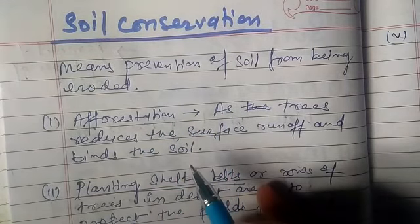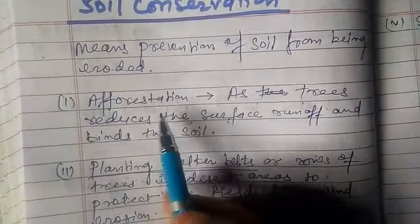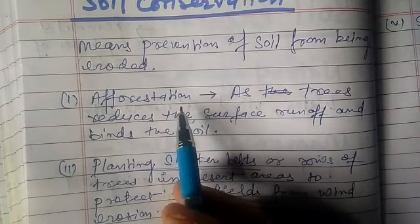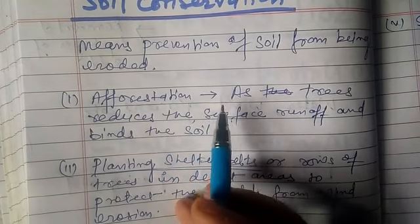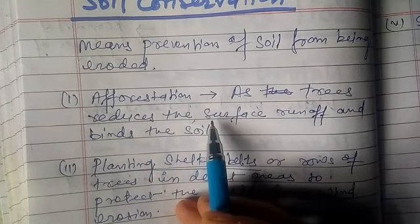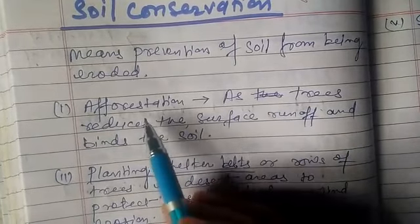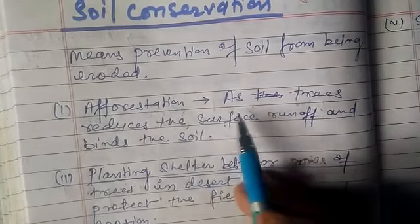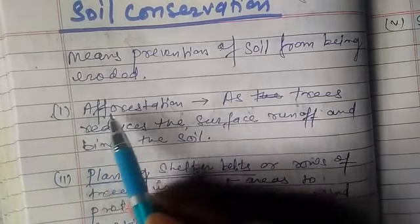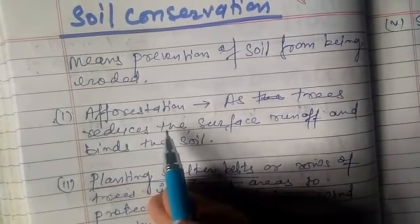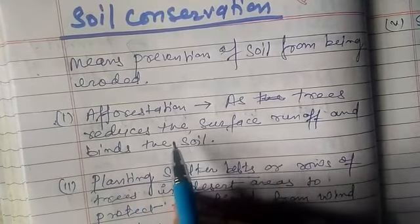There are various methods by which we can conserve the soil. The first is afforestation. Afforestation is the process of planting more and more trees and seeds on the land. Trees reduce the surface runoff and bind the soil, so by afforestation we can prevent soil from being eroded because the roots of the trees bind the soil.